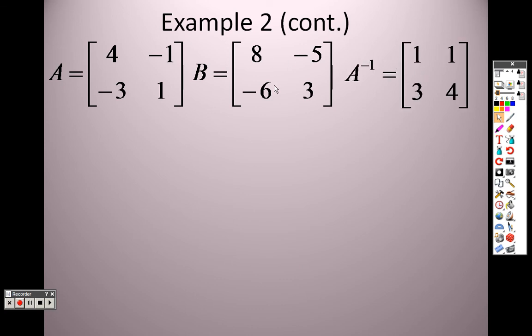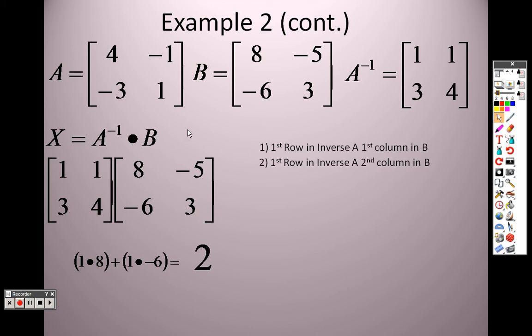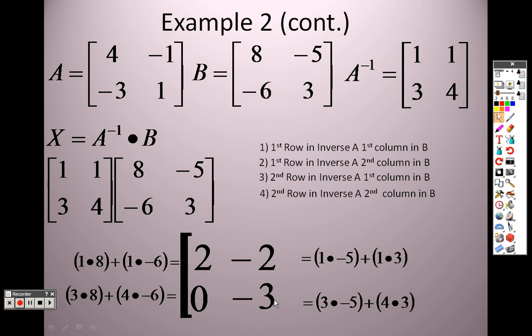So now I have the inverse matrix, and now I have B. So now I can actually multiply the two together. Remember when you're doing that, it's the first row by the first column. So 1 times 8 plus 1 times negative 6, which is 2. Then it's the first row by the second column, so 1 times negative 5 plus 1 times 3, which is negative 2. Then it is the second row by the first column, so 3 times 8 plus 4 times negative 6, which is 0. Then it's the second row by the second column, which is 3 times negative 5 plus 4 times 3, which is negative 3. And there is your answers for each of your X's.